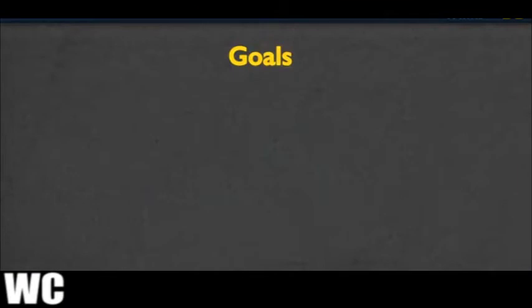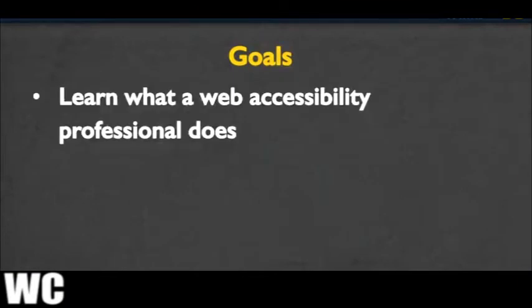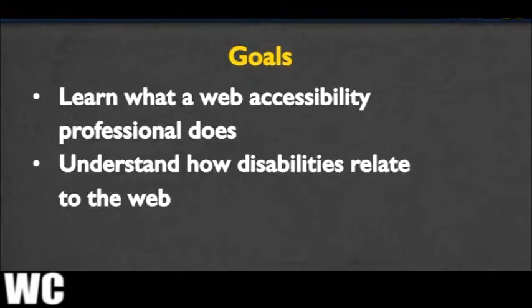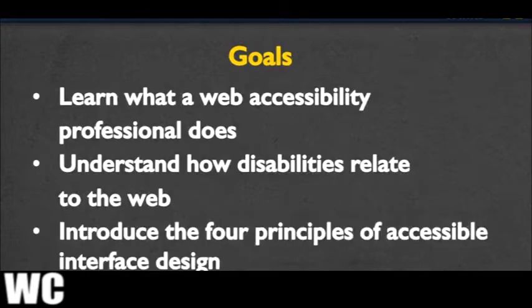One of the things I'm constantly talking about in my courses is accessibility. I've come to realize that I can talk about it as much as I want, but it's really up to me to show you why it's so important to make the web as accessible as possible. Today we're going to talk about three things: first, what a web accessibility professional does; second, how disabilities relate to the web; and finally, I'll introduce for the first time the four principles of accessible interface design - principles that will hopefully guide you throughout the entire time you're making web pages.